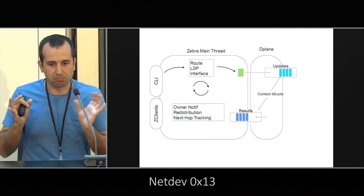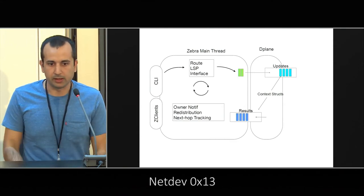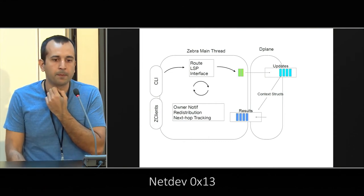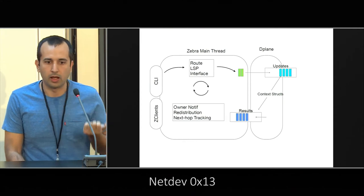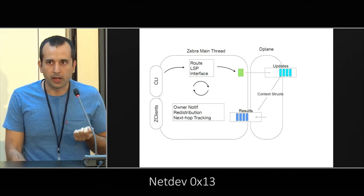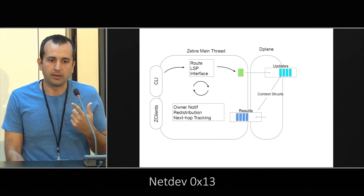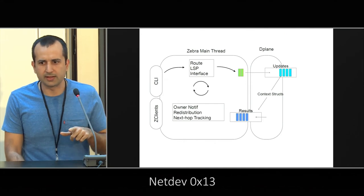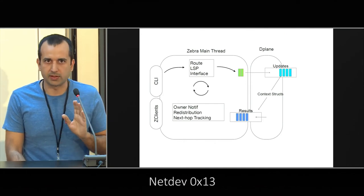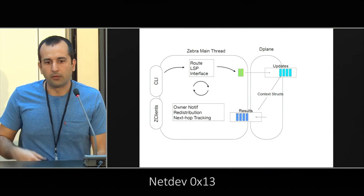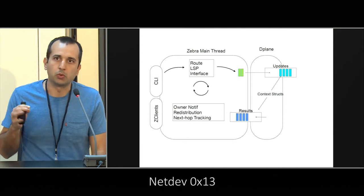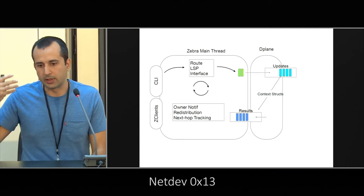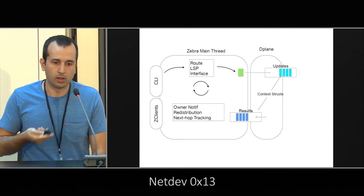The operations currently supported are route updates, nexthop updates, pseudowire states, and interface address updates. This work is not yet merged but there are pull requests under review. For each of these operations, you have APIs to populate the context object and pass it to the data plane provider, and then it does whatever it needs to do — install that route or update the forwarding entry.